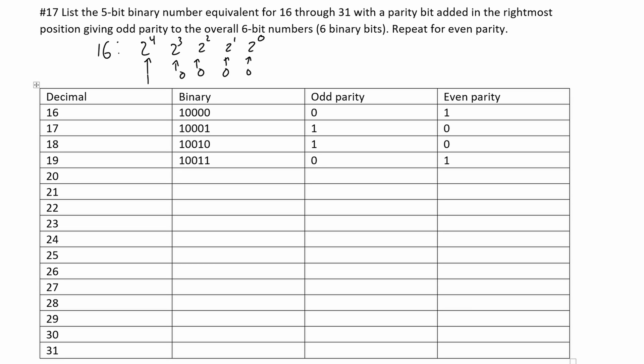For 20, it's just 16 plus 4, so we're going to have 1 0 1 0 0. We have an even number of ones, so we're going to have a 1 for our odd parity and a 0 for our even parity.